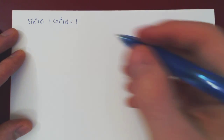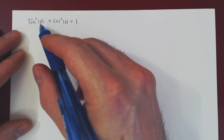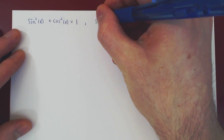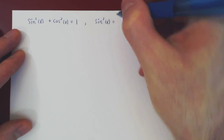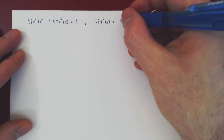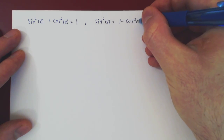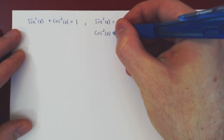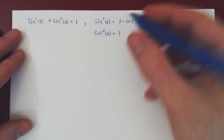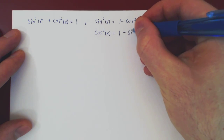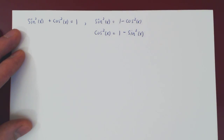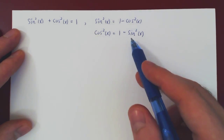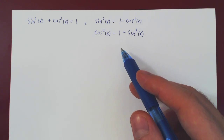This is a simple consequence of Pythagoras' theorem. We can isolate either term: sin²(x) = 1 - cos²(x), or cos²(x) = 1 - sin²(x). Using these identities, these integrals come down to a simple u-substitution.